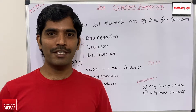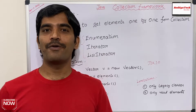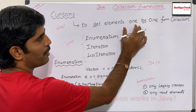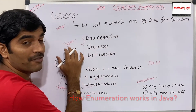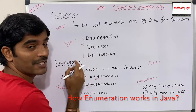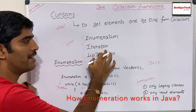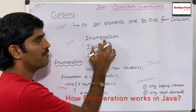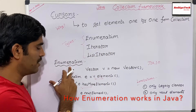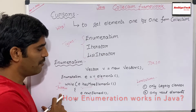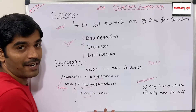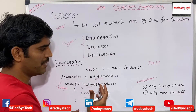If I want to get the elements from the collection one by one, then I have to go for the cursor concept. A cursor is nothing but a way to get elements one by one from the collection. We have three different types of cursors in Java: enumeration, iterator, and list iterator. We are going to look into enumeration in detail. Enumeration is nothing but an interface. With the help of this interface, we can iterate over the elements inside the collection and then manipulate them.